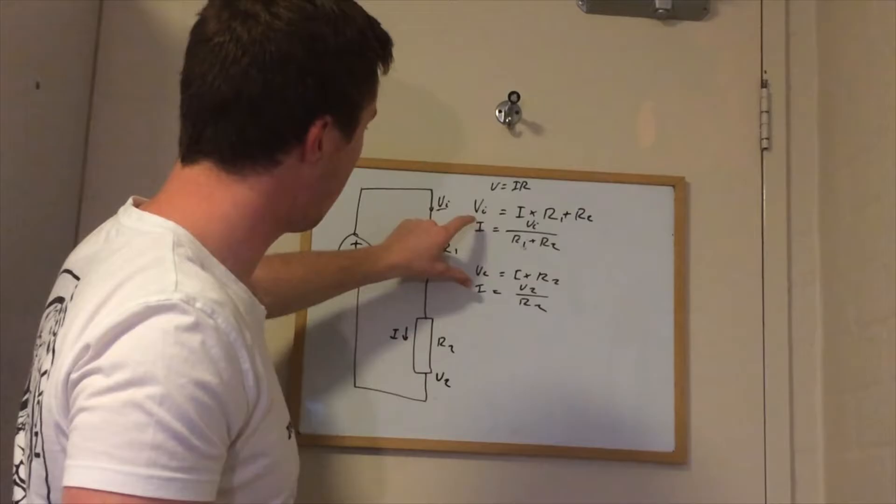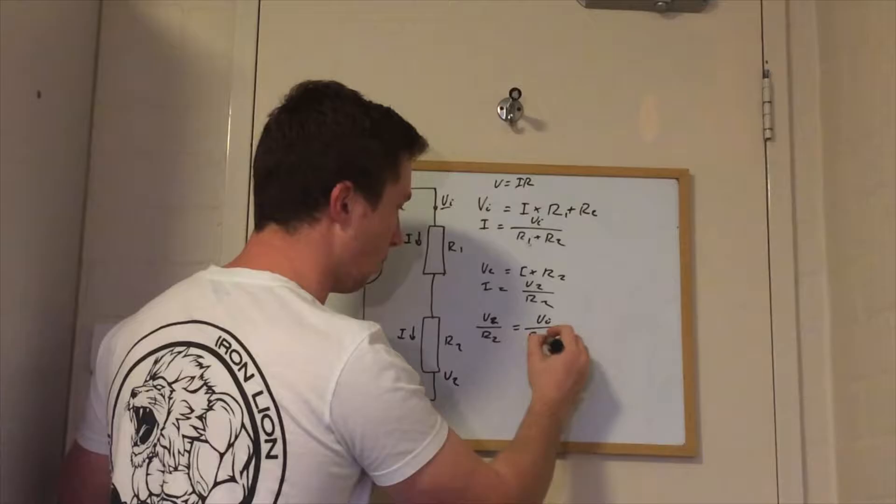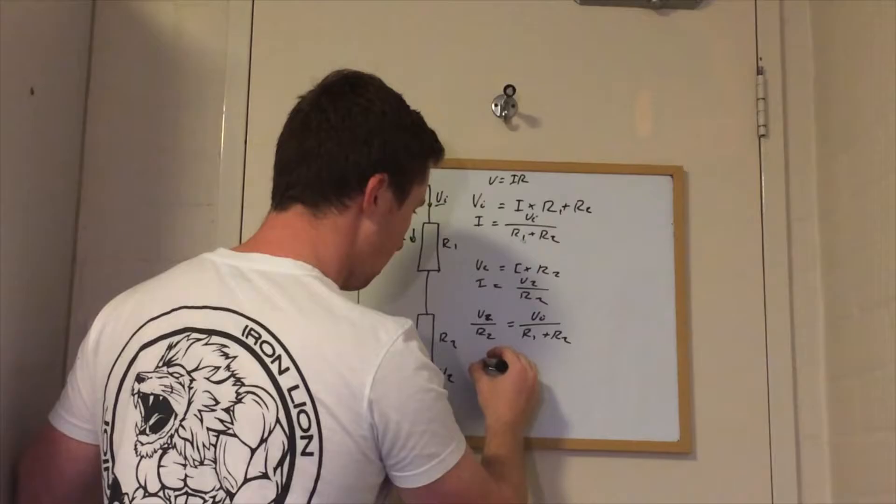We know that these currents are the same in a series circuit, so we can make both of these I values equal.